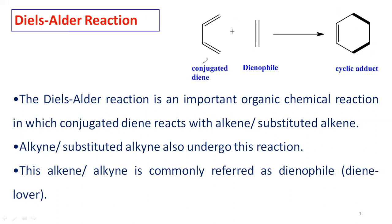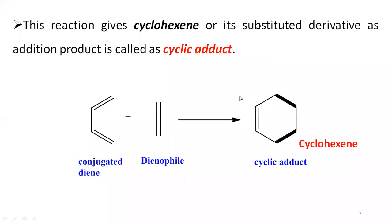The Diels-Alder reaction is also considered a 4+2 cycloaddition. It is called 4+2 cycloaddition because the cyclic addition product ring is formed by the interaction of 4 pi electrons of the conjugated diene with 2 pi electrons of the alkene or alkyne — that is, the 2 pi electrons of the dienophile — to produce a cyclic addition product.